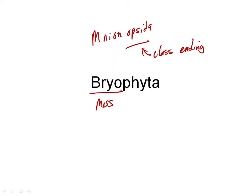'Opsida' is the class ending. And that's a very difficult word to pronounce. Mnium, I guess, is the name of a genus in the Mniopsida. This class, Mniopsida, is really the class that contains the mosses — it's the class that the whole division is named after.